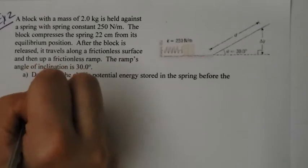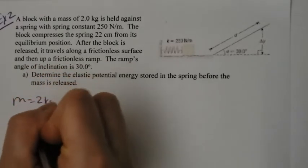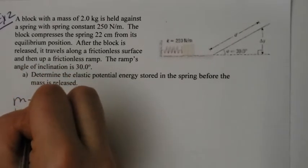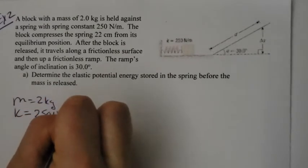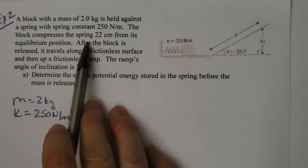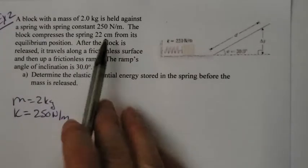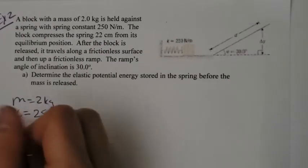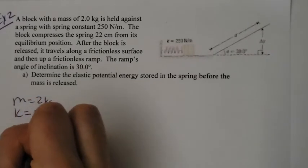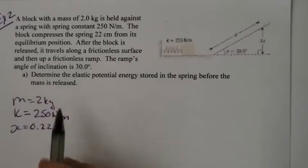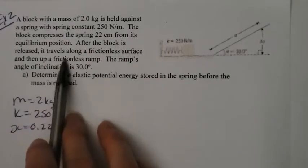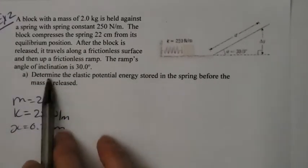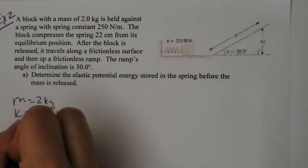Let's start by writing down what we know. The mass is 2 kilograms. K is 250 newtons per meter. The compression is 22 centimeters, or 0.22 meters, from its equilibrium position. After the block is released, it travels, and we know that the angle here is actually 30 degrees.